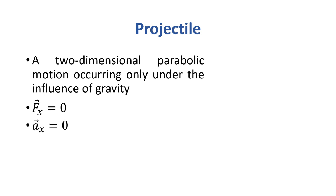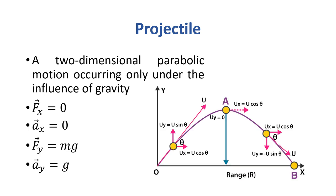Acceleration in the x direction, i.e., the horizontal component, is zero because the force is zero. Fy equals mg, which is the weight of the body, and acceleration in the y direction is g, which is gravitational acceleration.